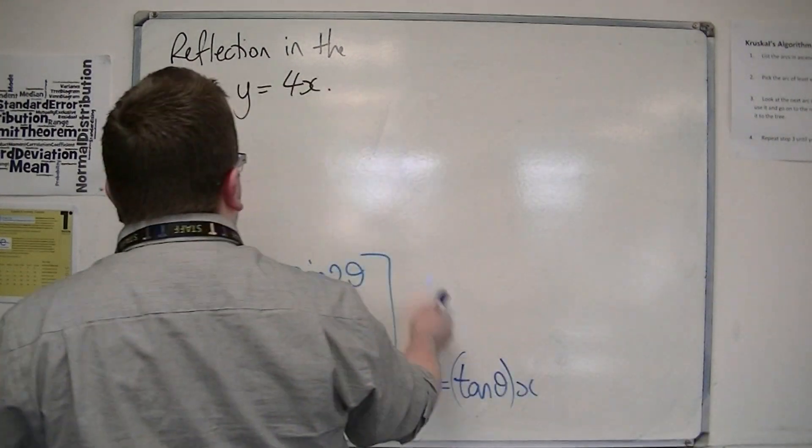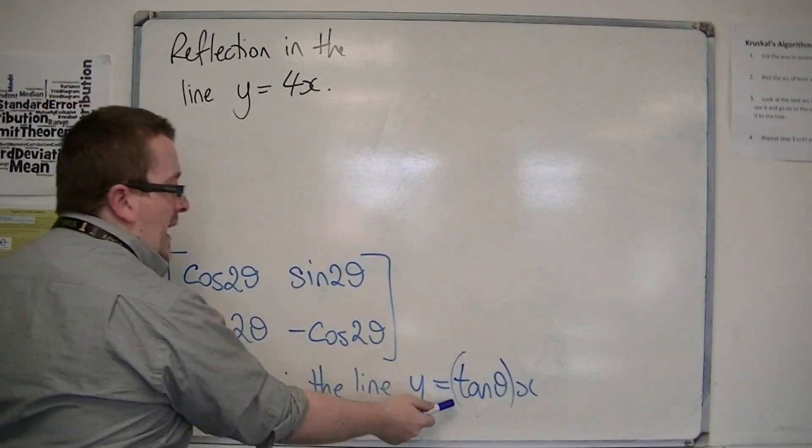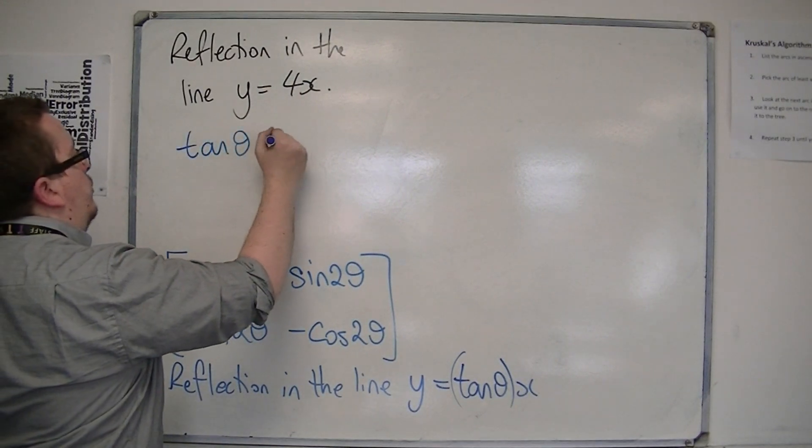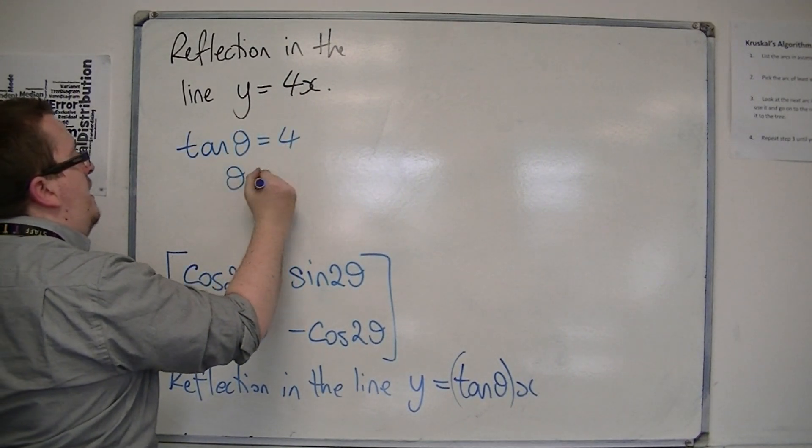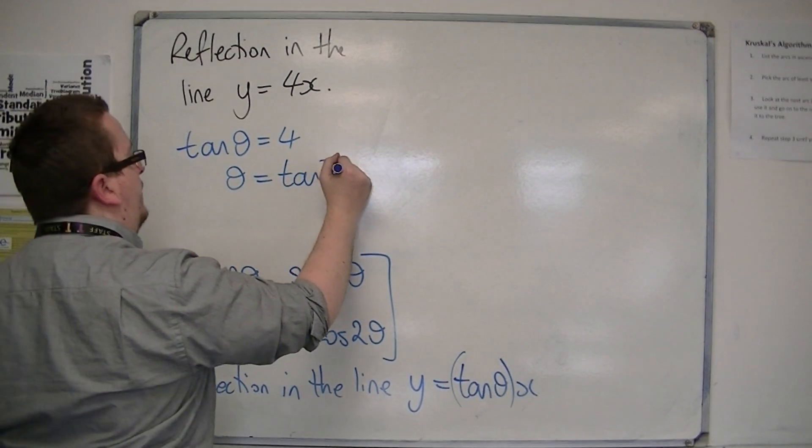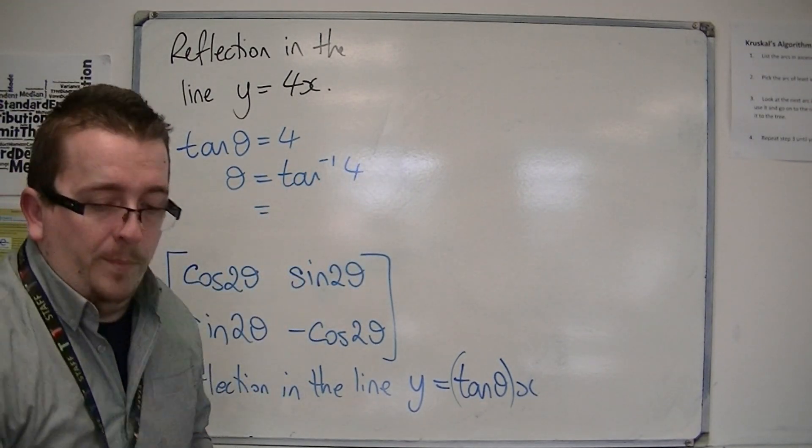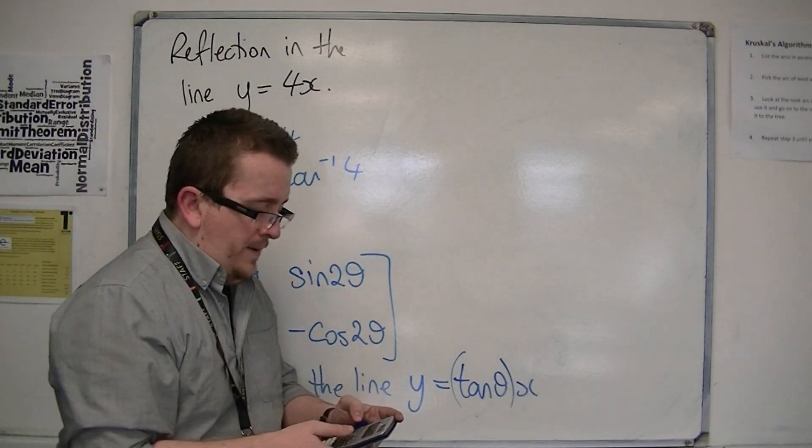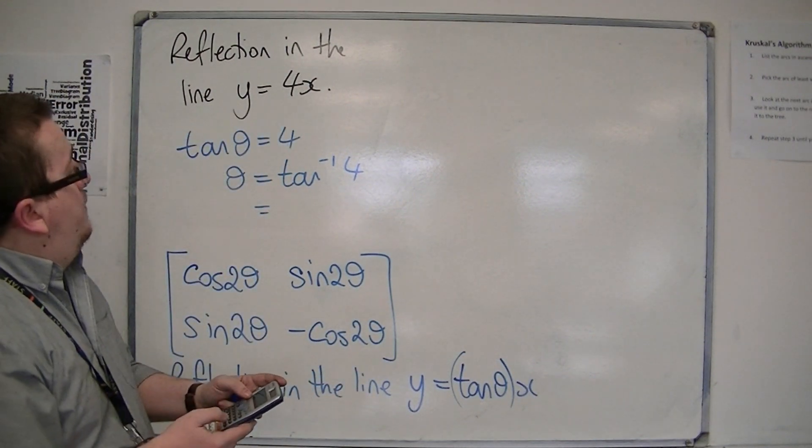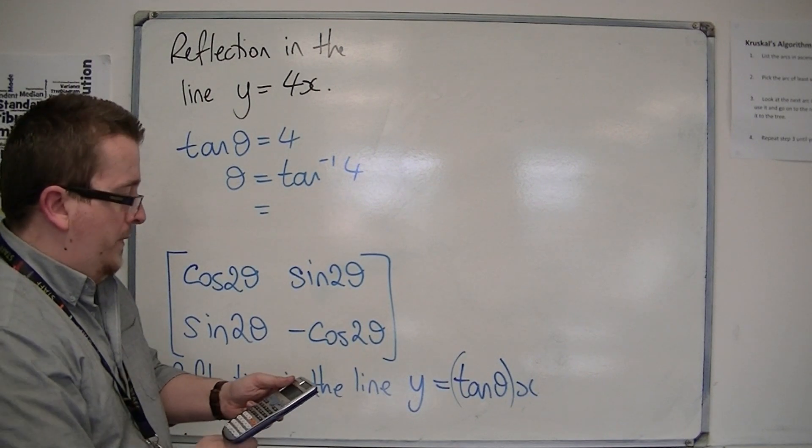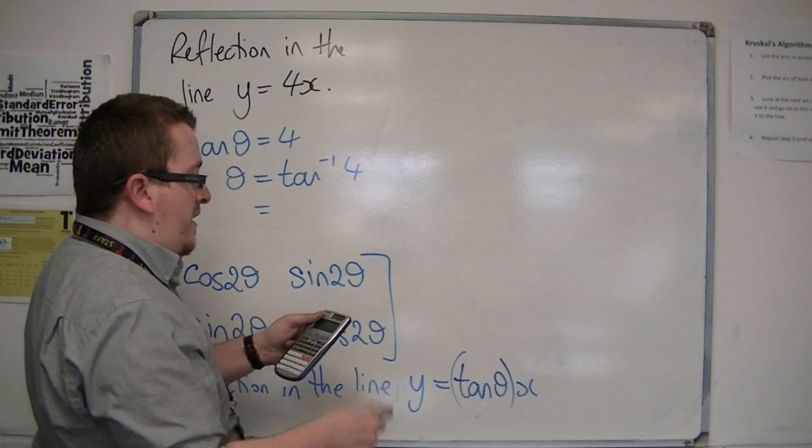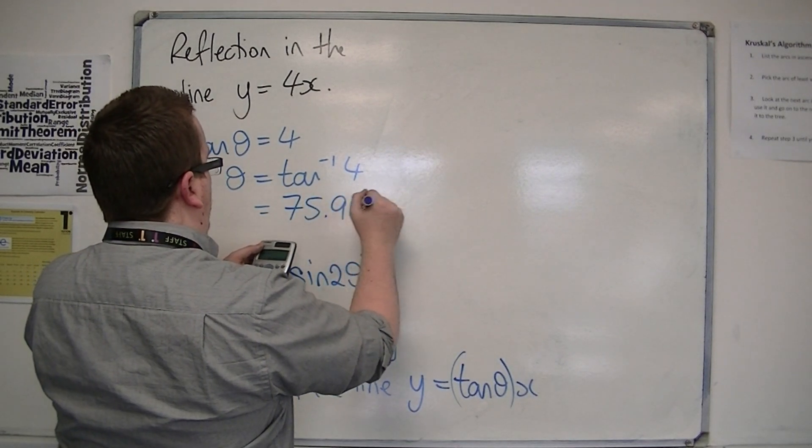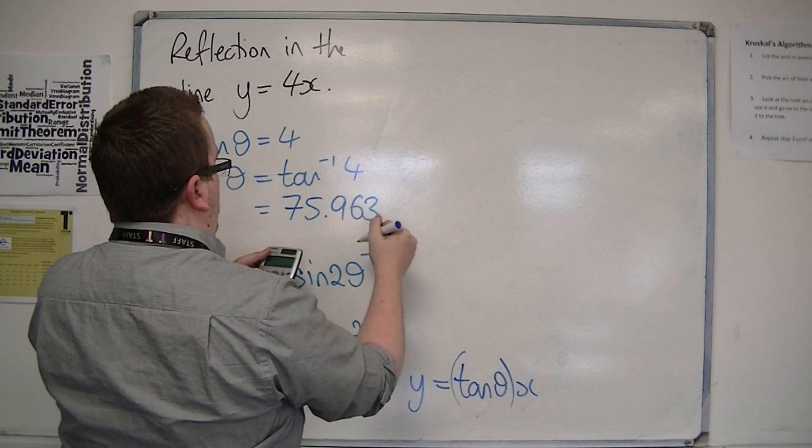So if we compare what we want with what we have, that would mean that tan theta must be equal to 4. You can inverse tan both sides to work out what the angle would have to be. So in degrees mode, remember, inverse tan of 4 is 75.963756.